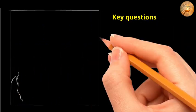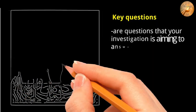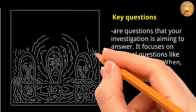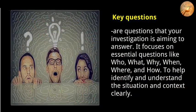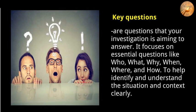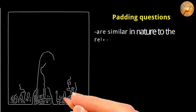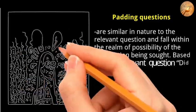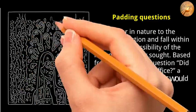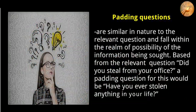Key questions focus on essential elements — who, what, why, when, where, and how — to help identify and understand the situation clearly. They aim to elicit details about the crime that only a guilty subject would know, such as the crime scene and means of committing the crime. Padding questions are similar in nature to known relevant questions; for example, based on the relevant question 'Did you steal from your office?', a padding question would be 'Have you ever stolen anything in your life?'